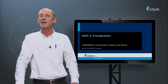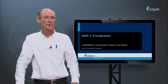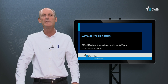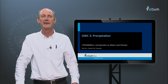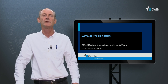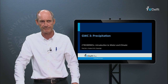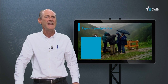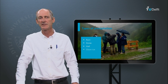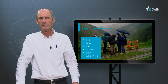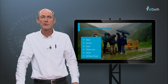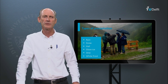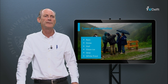We have seen that the hydrological cycle has no start and no end. But generally we say that the terrestrial cycle starts with the precipitation. There are many different types of precipitation besides rainfall. There is of course snow and hail, which is the frozen form of rainfall.